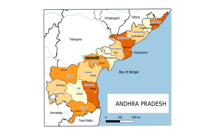I am going to divide the Andhra Pradesh map into two groups. The first group includes: Srikakulam, Vijayanagaram, Vishakhapatnam, East Godavari, West Godavari, Krishna, and Guntur. The second group includes Kurnool, Prakasham, Anantapur, Kadapa, Nellore, and Chittoor. The reason for this division is that Kurnool and Prakasham lie almost on the same latitude, and Anantapur, Kadapa, and Nellore also lie on the same latitude.